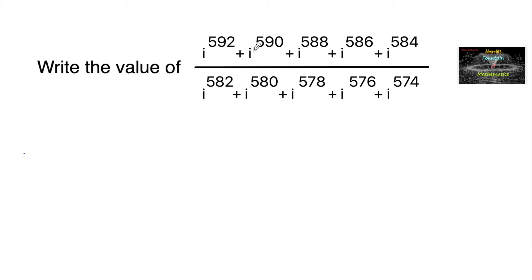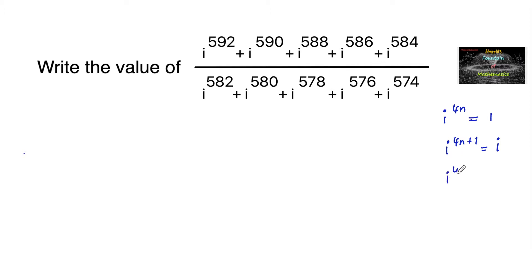We need to find the value of i to the power of 590 plus ... plus i to the power of 584, upon i to the power of 582 plus ... plus i to the power of 574. These are consecutive even powers. We use the concept: i^(4n) = 1, i^(4n+1) = i, i^(4n+2) = i² = -1, and i^(4n+3) = -i.